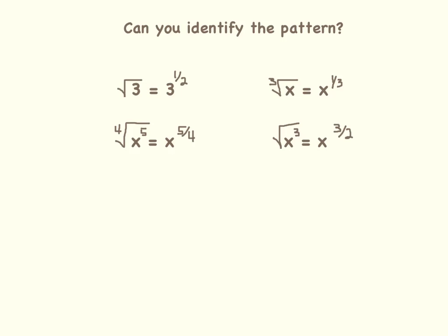Let's look at the third one. In this example, we are taking the fourth root of x to the fifth power, and that is the same thing as x to the 5/4 power. The 5 comes from the exponent — x to the fifth power — and that's where the numerator comes from. The denominator of 4 comes from taking the fourth root. Now for the last example, we're taking the square root of x to the third power. Taking the square root is taking the second root, so the denominator in the exponent is 2, and since we're taking it of x to the third power, the numerator is 3.